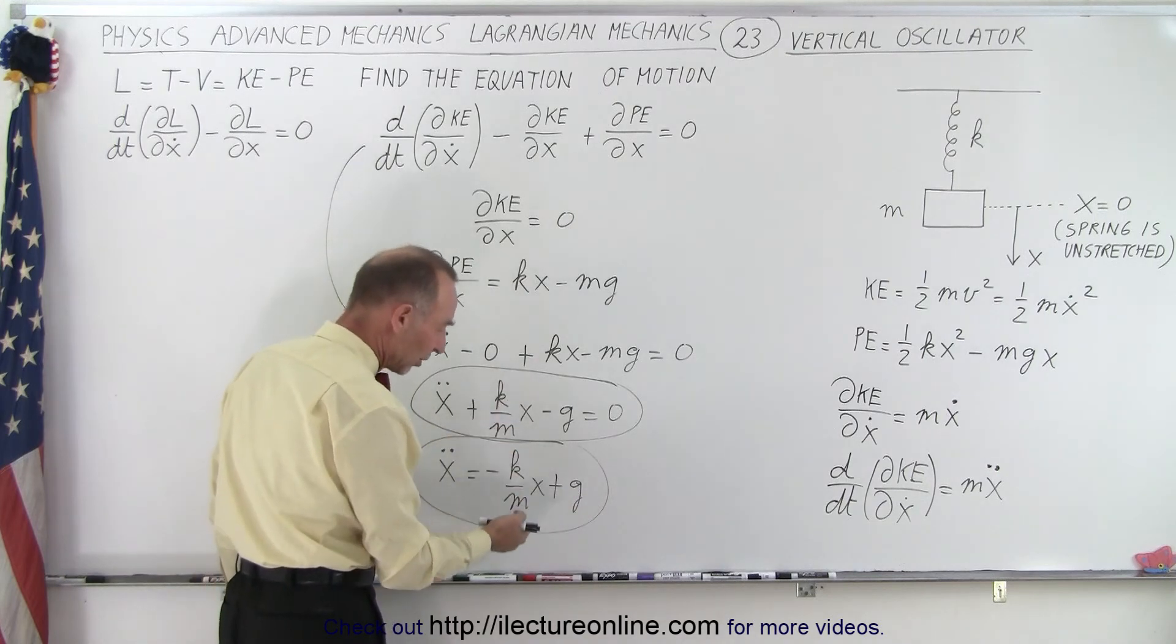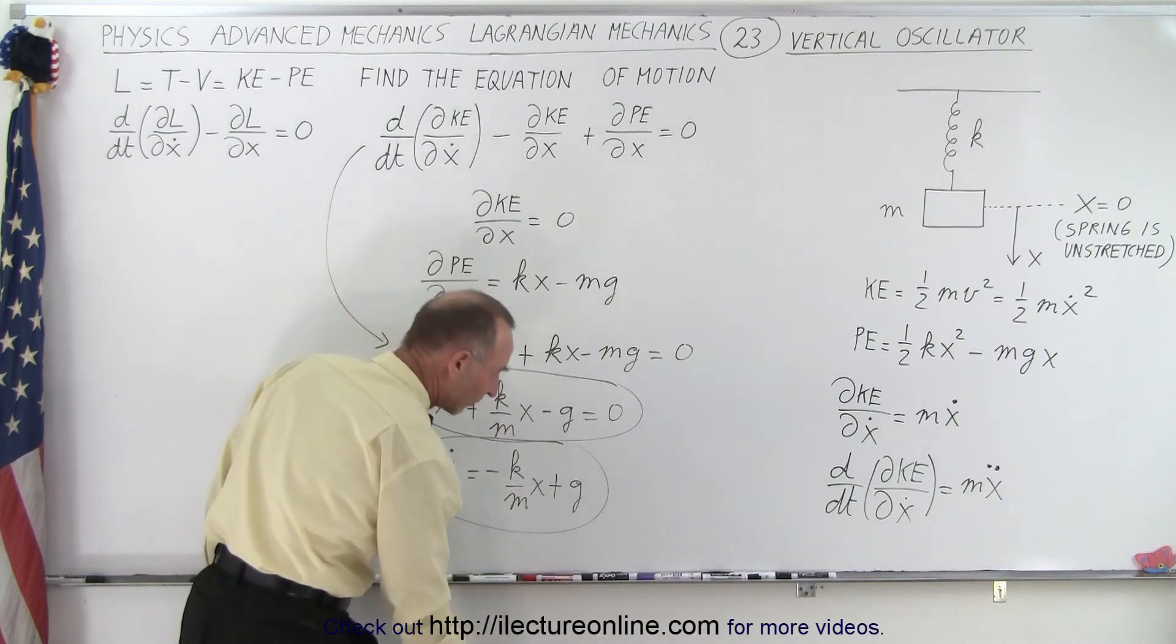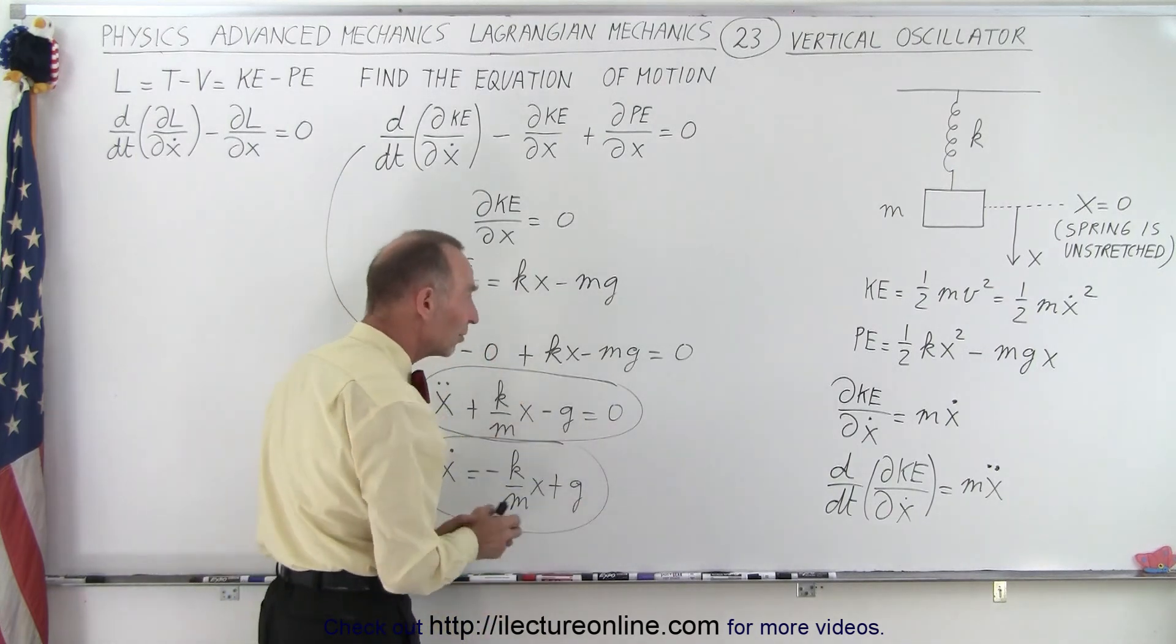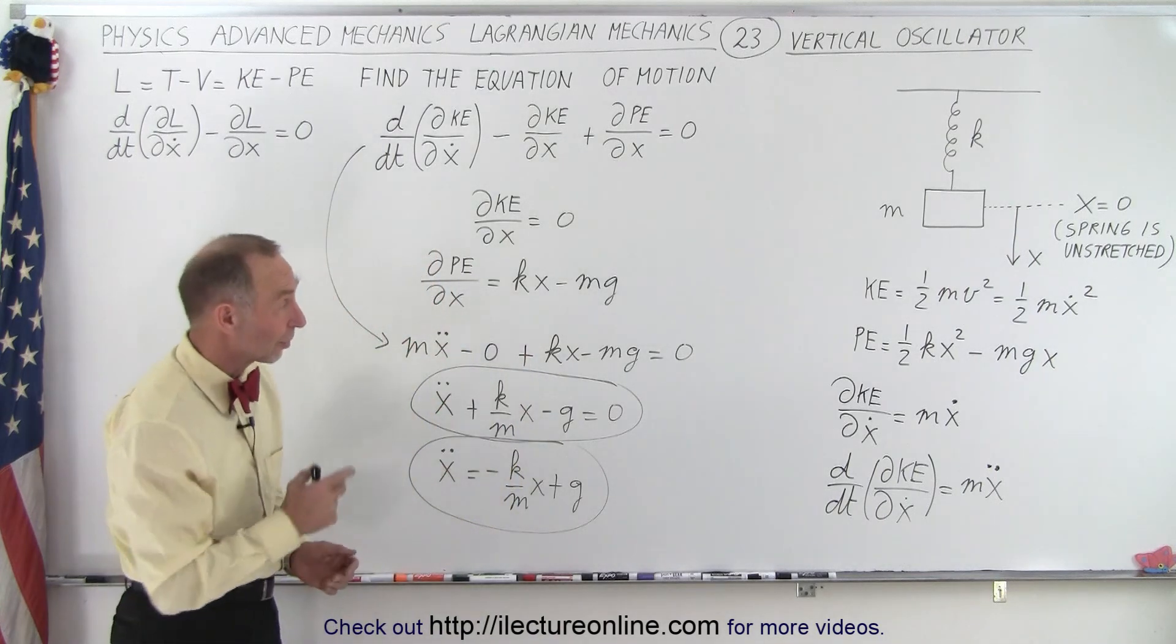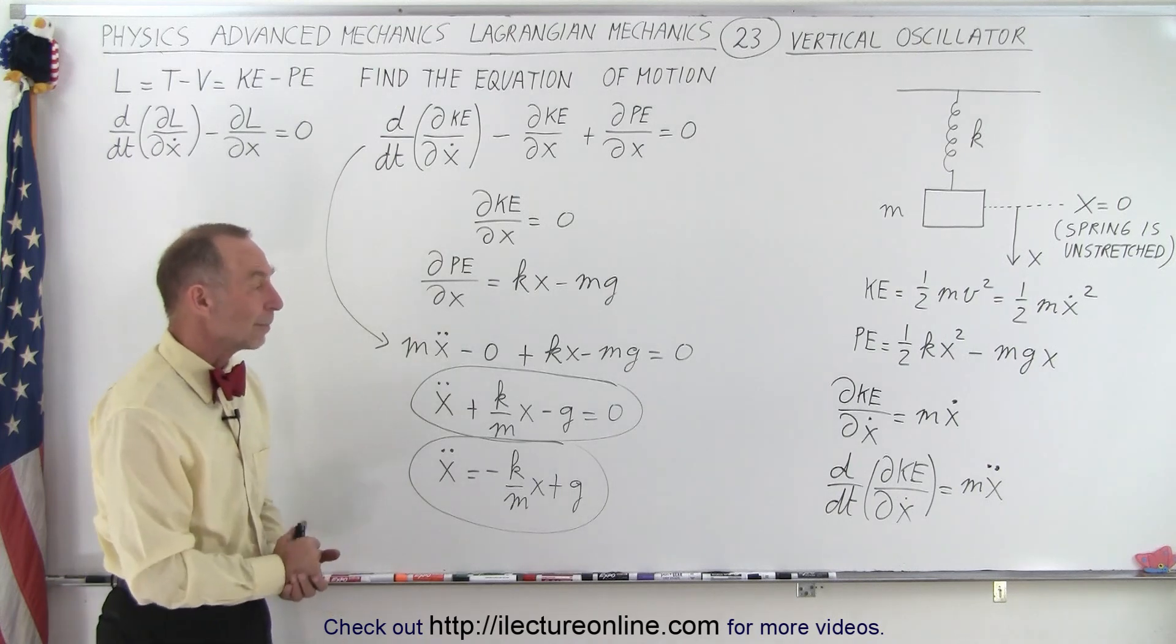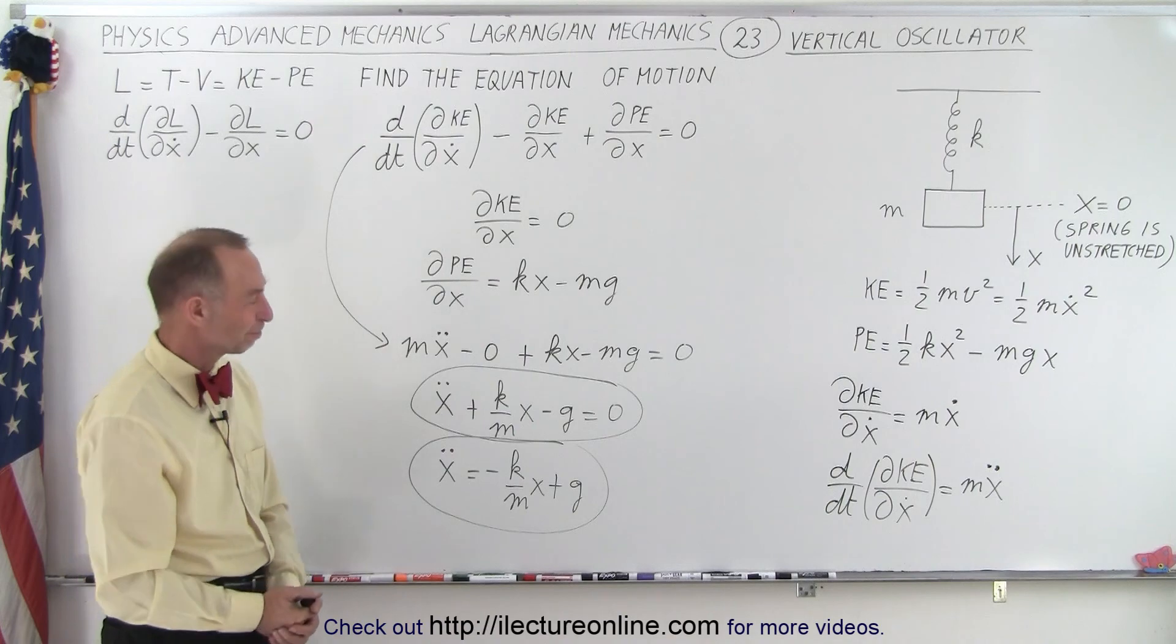Then of course, the object will overshoot that point, get to a lower point, and begin to oscillate back and forth like this. So that makes sense, this equation, and you can see that's a great way to solve this using kind of an aberration of the Lagrangian technique. But that's why we did a video on it, so you can see how that works. Thank you.